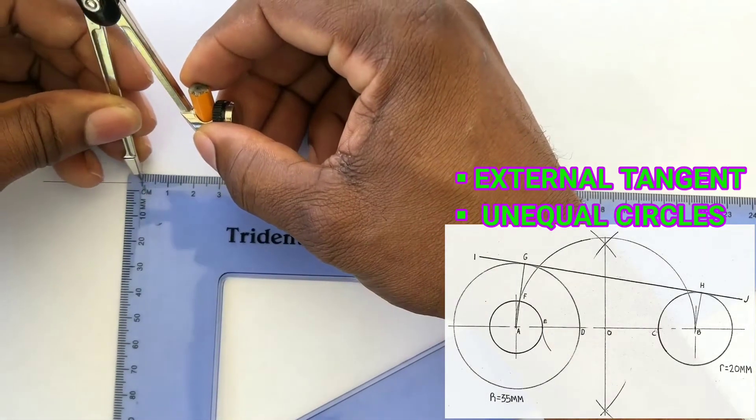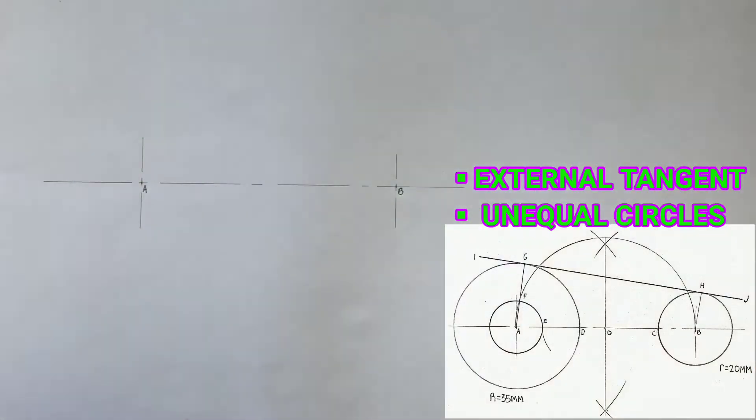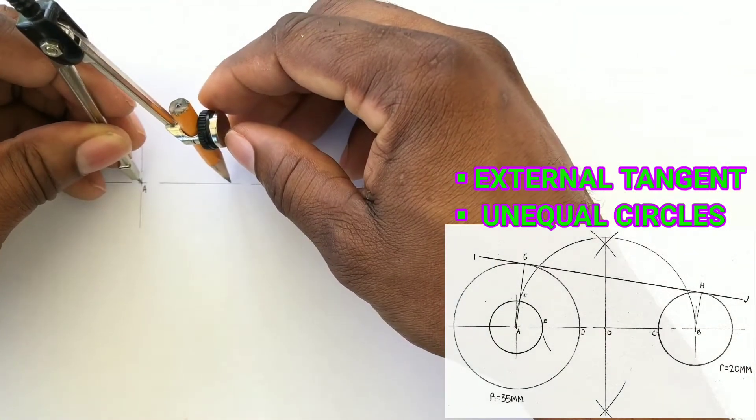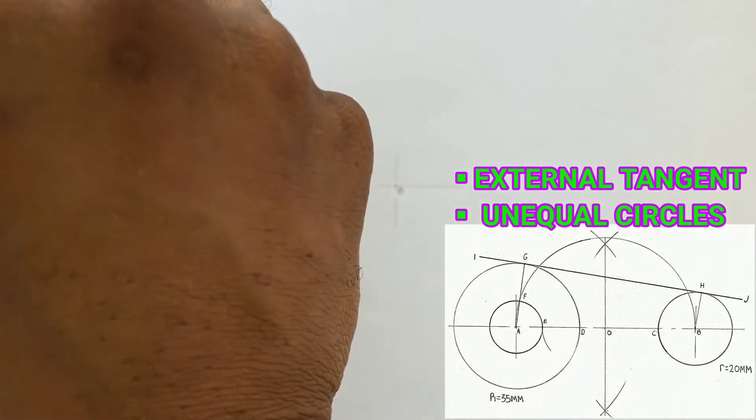We will now open our compass to a radius of 35 millimeters and using A as center we will now draw a circle.